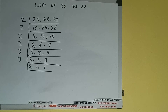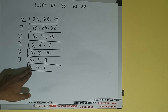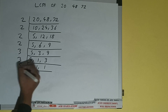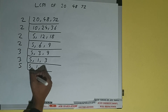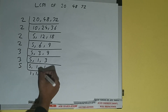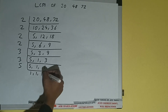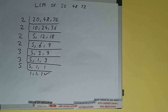Now none of the numbers are divisible by 3, so we check with the next lowest prime number, which is 5. This number is divisible by 5, so we'll divide and we'll be having 1, 1, 1. Once we get that, we need to stop.